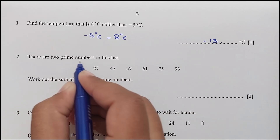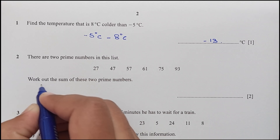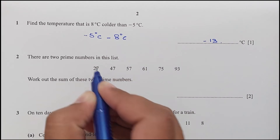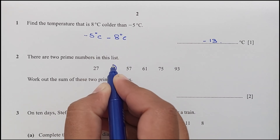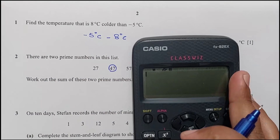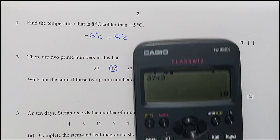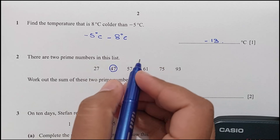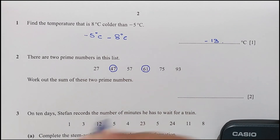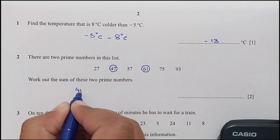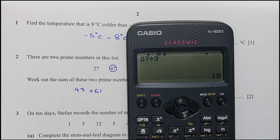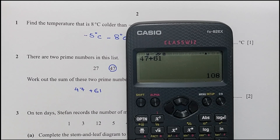Question number 2: there are 2 prime numbers in this list. Work out the sum of these 2 prime numbers. 27 is not a prime number. 47 is a prime number. 57 is not a prime number — 57 is divisible by 3. 61 is a prime number. 75 is divisible by 5 and 93 is divisible by 3. So 47 and 61 are the prime numbers. 47 plus 61 is 108.